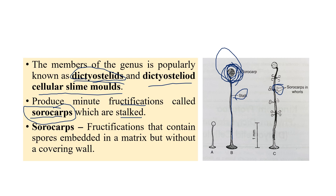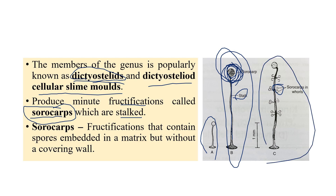Some sorocarps also show slight differences, with whorl-like structures on the stalks. These are all sorocarps of different types. For example, picture A shows the sorocarp of Acytostelium, picture B shows the typical Dictyostelium sorocarp, and picture C shows Polysphondylium. Different kinds, but all share the common feature of a stalked sorocarp.